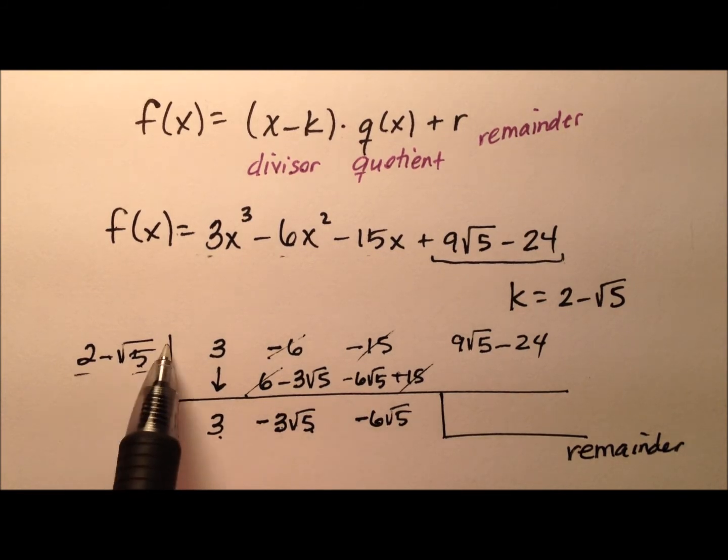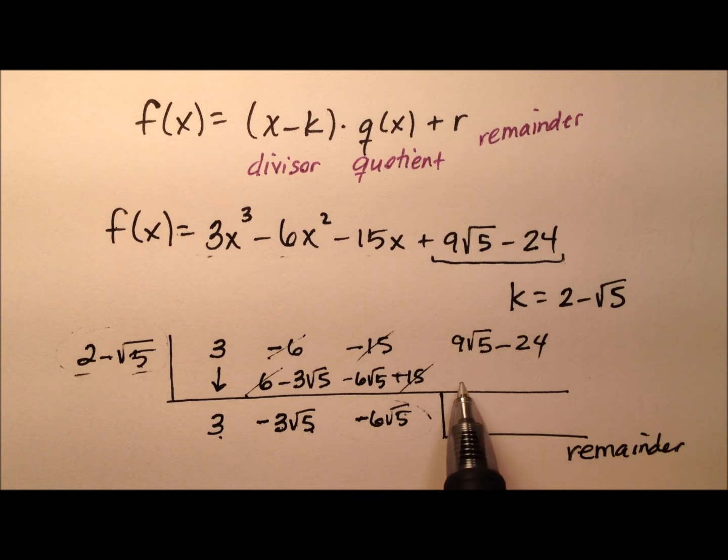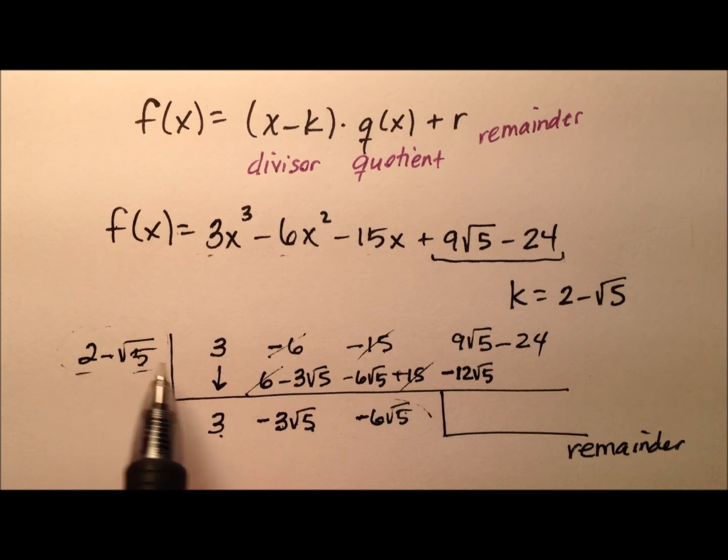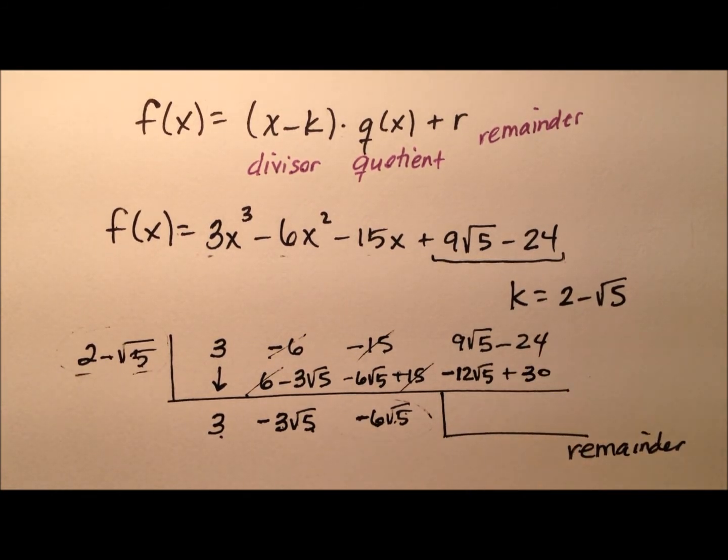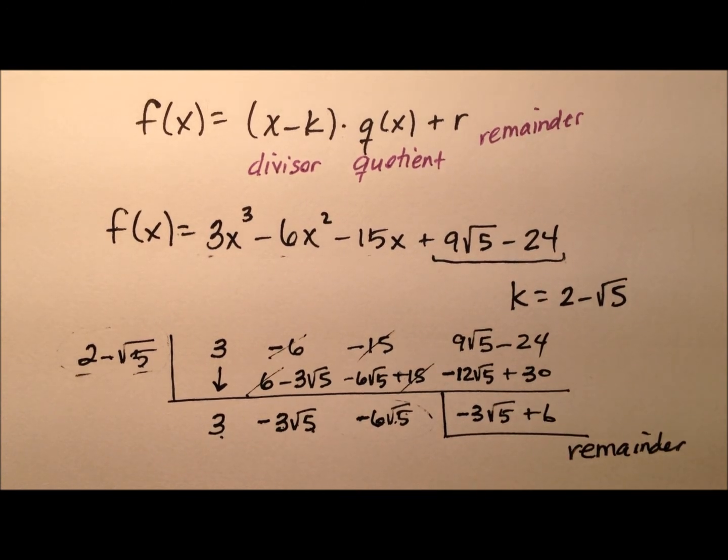Okay, and let's go ahead and multiply one more time. 2 times negative 6 radical 5 will be negative 12 radical 5, and then we have the negative radical 5 times the negative 6 radical 5 should be plus 30. So to wrap up, it looks like we have negative 3 radical 5 plus 6 for our remainder there.